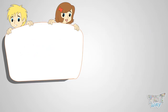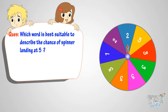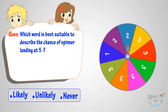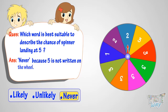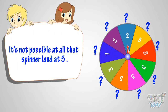Now, which word is best suitable to describe the chance of spinner landing at five? Likely, unlikely, or never? The answer is never, because five is not written on the wheel. So it's not possible at all that the spinner will land at five.